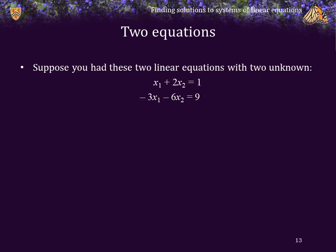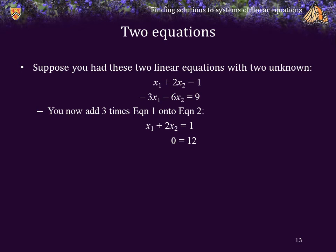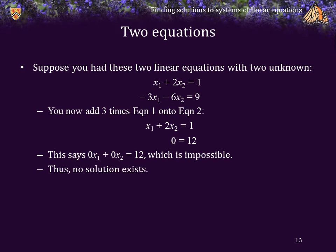Suppose you had these two linear equations with two unknowns. You can add 3 times equation 1 onto equation 2, but you get something bizarre: you get 0 equals 12. What this is actually saying is 0 times x1 plus 0 times x2 is equal to 12. There are no values of x1 and x2 which can give a result of 12, so this is impossible. Consequently, no solution exists.